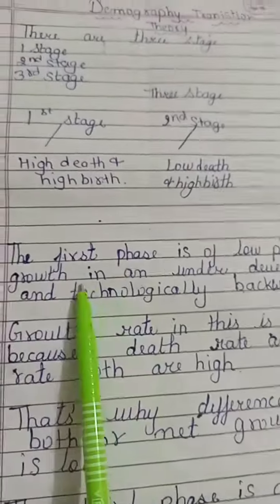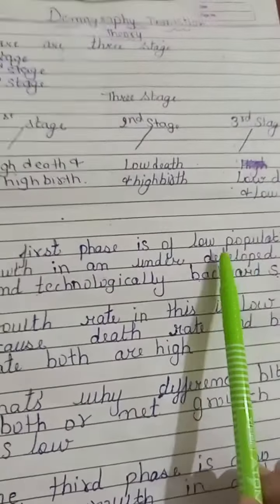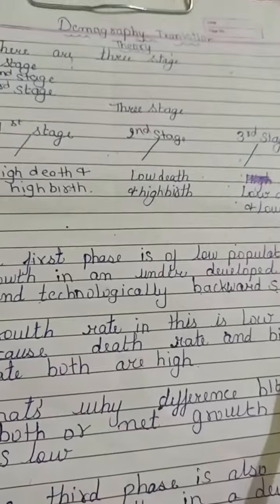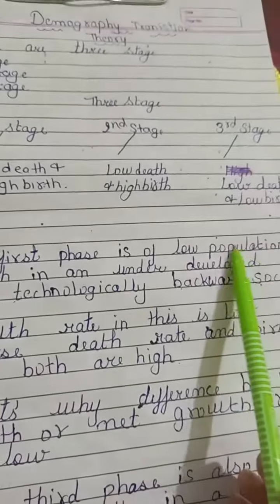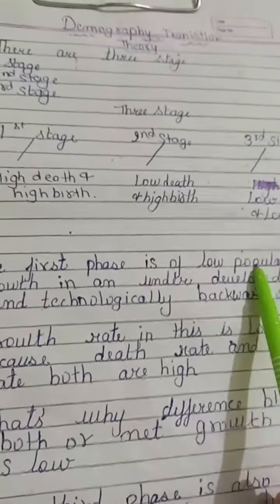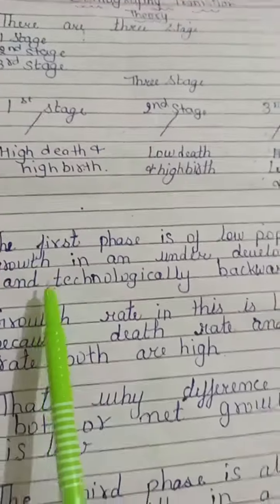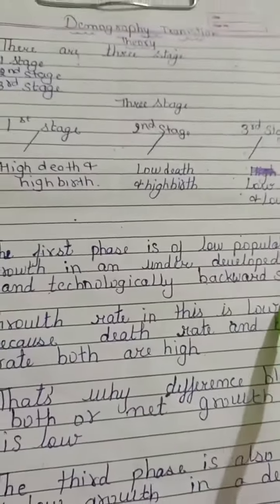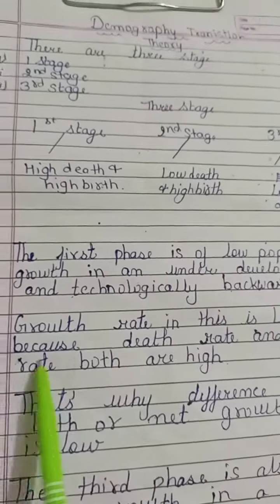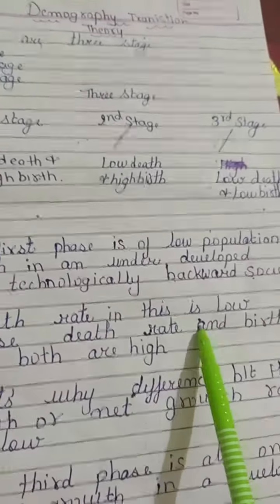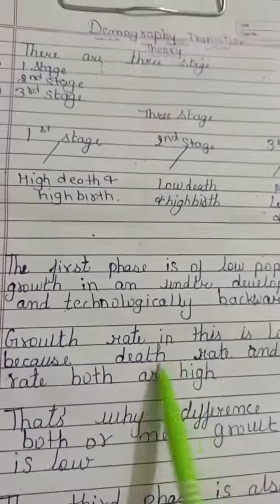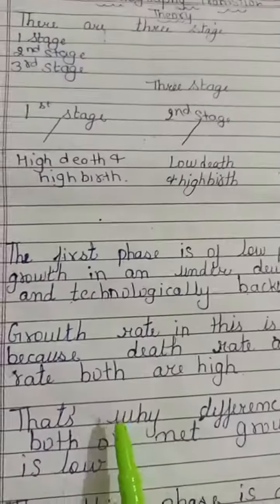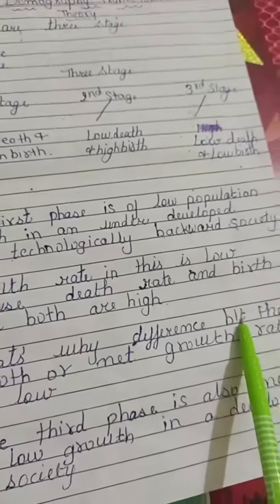The first phase is of low population growth in an underdeveloped and low-technology background society. We can underline this as low population growth. The growth rate is low because both the death rate and birth rate are high, so the difference between both — the net growth rate — is low.